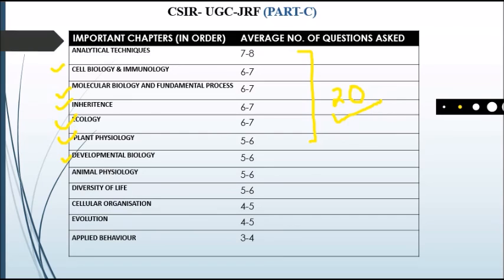In conclusion, for both Part B and Part C qualification, the common important chapters are analytical techniques, cell biology, molecular biology, fundamental processes, ecology, inheritance, and plant physiology. These are the chapters that are important for both sections, so please read them carefully and thoroughly. Thank you very much.